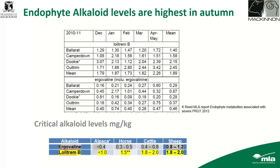Alkaloid levels tend to be highest in autumn. Data from 2010–11 from research collecting monthly pasture samples from multiple Victorian sites showed lolitrem B levels were highest on average in mid to late autumn, while ergovaline levels were more variable and peaked in January on average. Reference levels are not always being exceeded. It's also worth noting that alpacas are incredibly sensitive to lolitrem B, and cattle get ryegrass staggers much more severely than sheep.